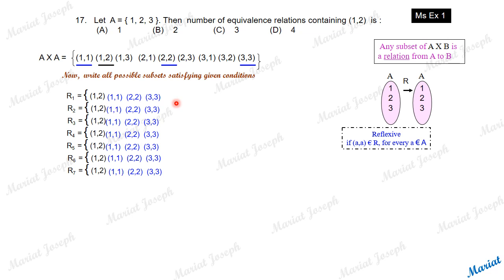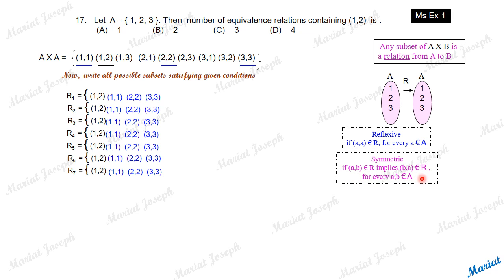The second condition for equivalence is that the relation must be symmetric. If a pair (a, b) is in the relation, then (b, a) must also be in the relation. Since (1,2) is required, we must also include (2,1) to keep the relation symmetric. Only then will the relation be symmetric.